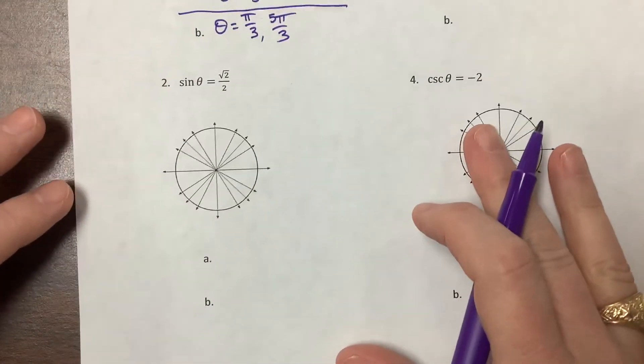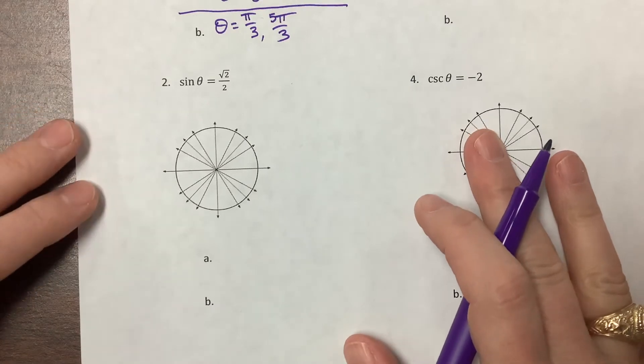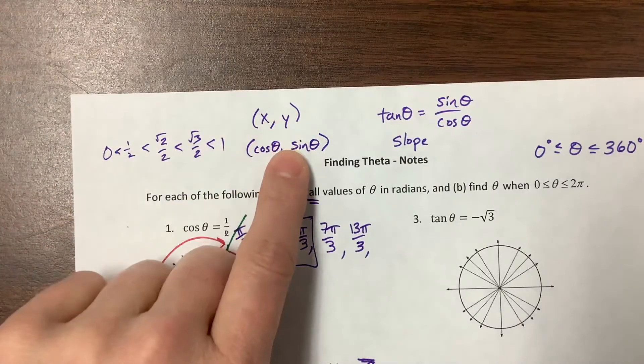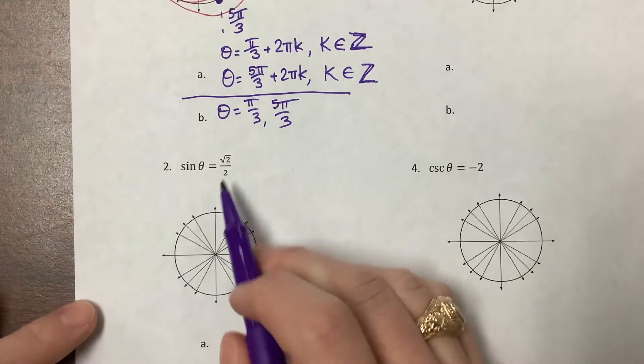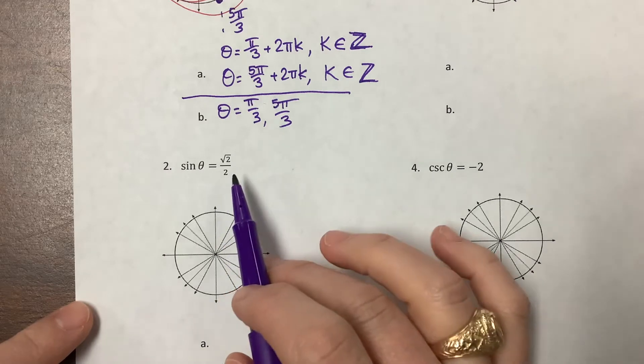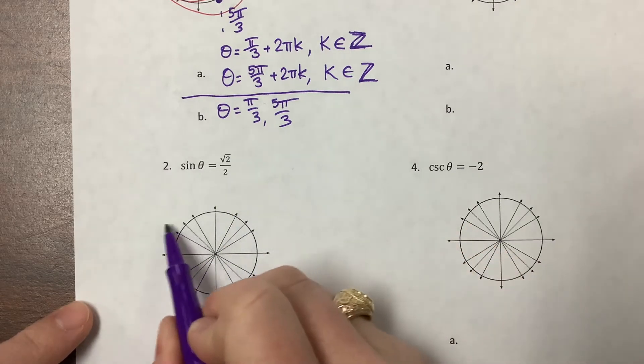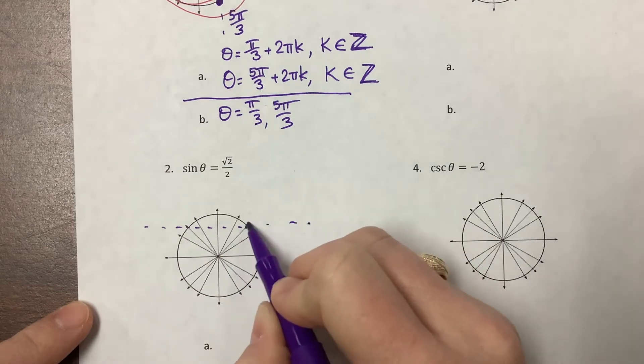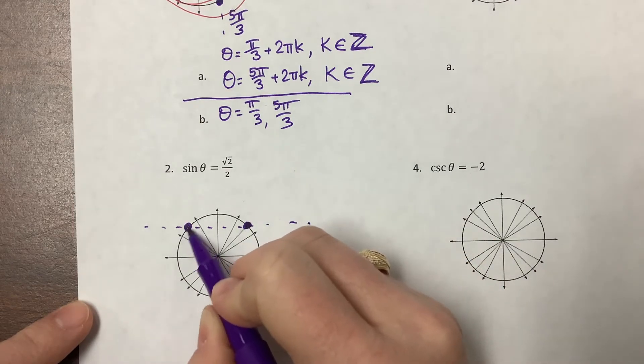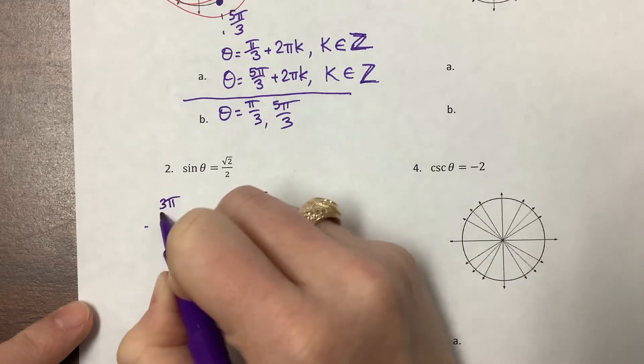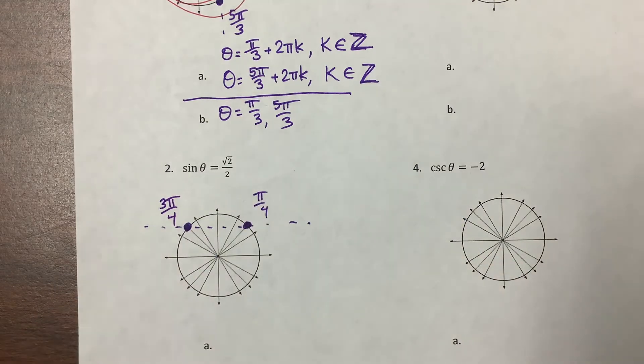So let's look at the next one. Now they're telling us sine is equal to root 2 over 2. So sine, as you know, sine is the y value. So I want to know, when is my y value root 2 over 2? Root 2 over 2 tells me I'm in the pi over 4 family. Since it's positive, that means that I've got this positive line going through here. So it's this point, or it's this point on my circle, which is pi over 4, and then 3 pi over 4.